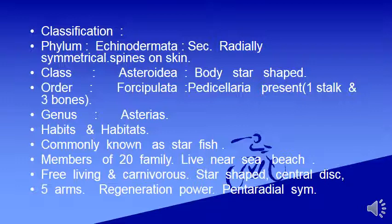Class: Asteroidea — body is star-shaped. Order: Forcipulatida — pedicillaria is present, with one stalk and three bones present.